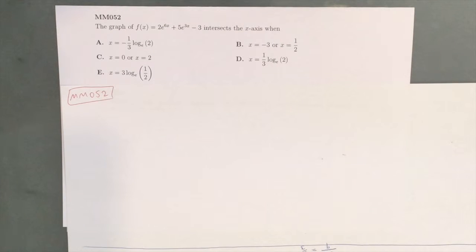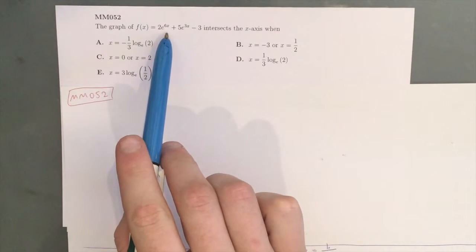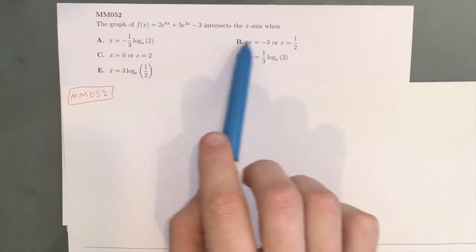Hey guys, this is question MM052 of the Maths Methods Sharpen Study Guide. We've got the graph of f(x) = 2e^(6x) + 5e^(3x) - 3, and we need to find out when it intersects the x-axis.